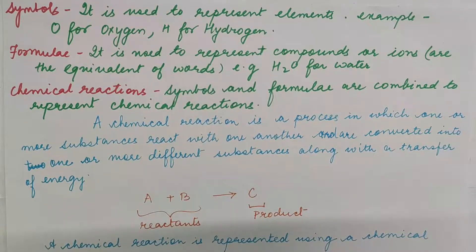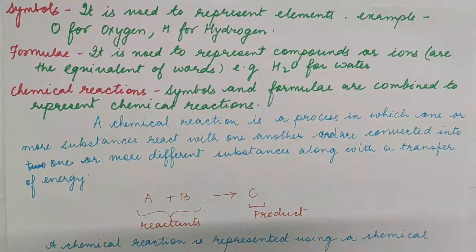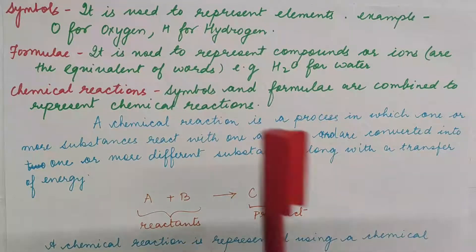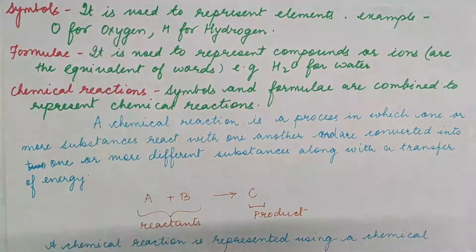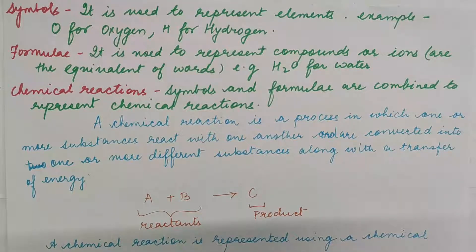If I talk about symbols, a symbol is a representation of an element. For example, O is used to represent oxygen in chemistry, H for hydrogen, and like that. As you know, we have 118 elements, and we have 118 different symbols for representing those elements.